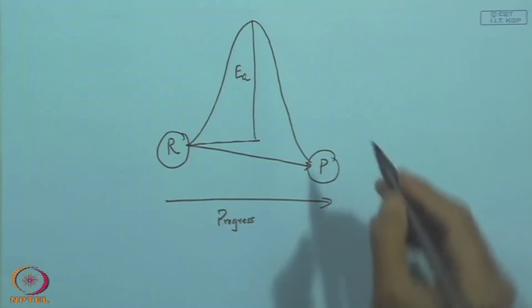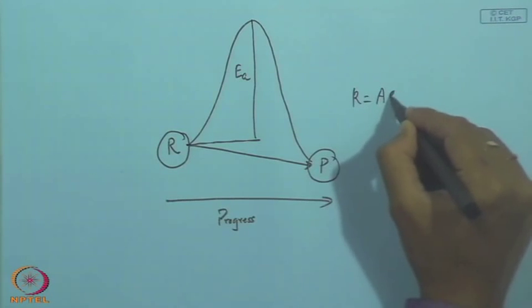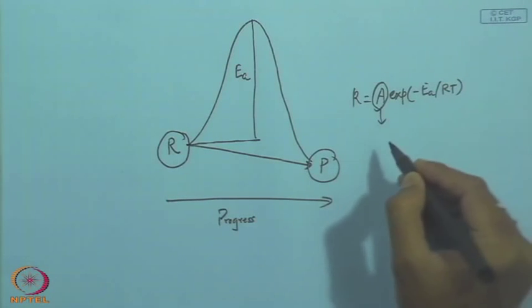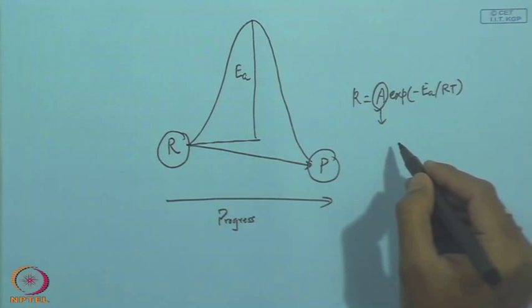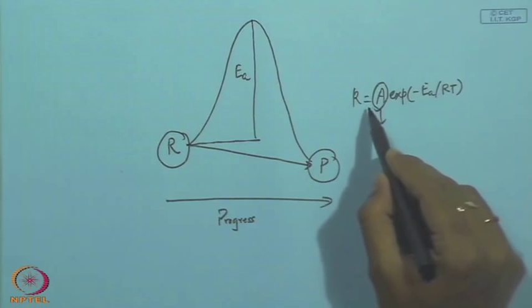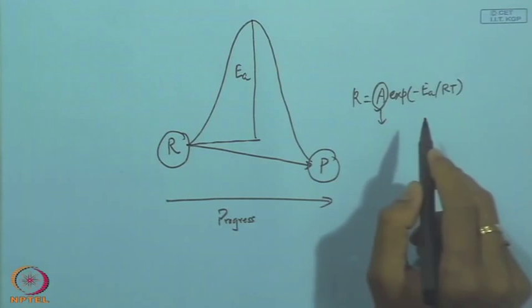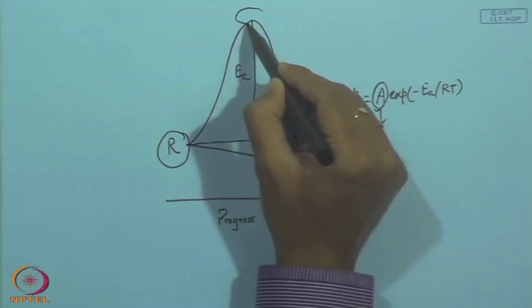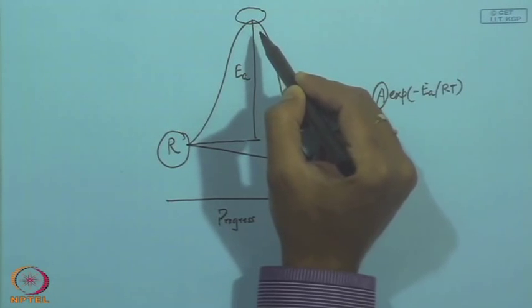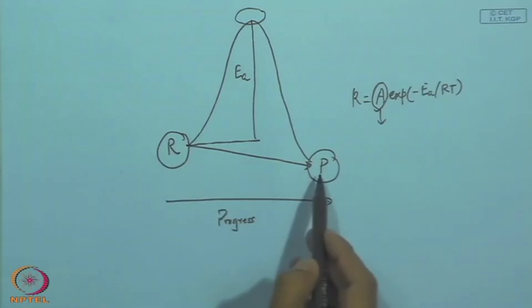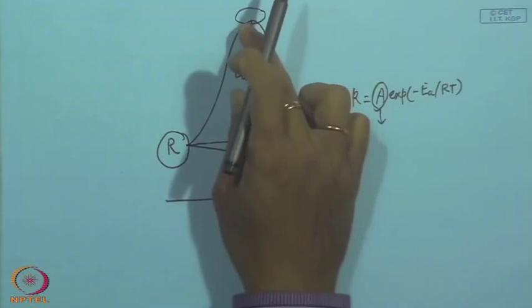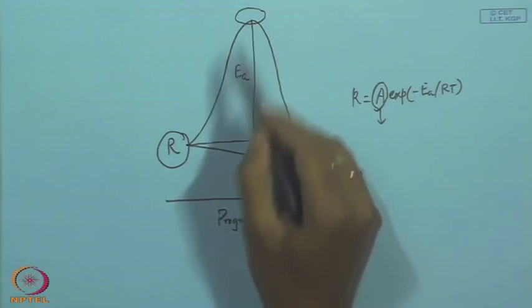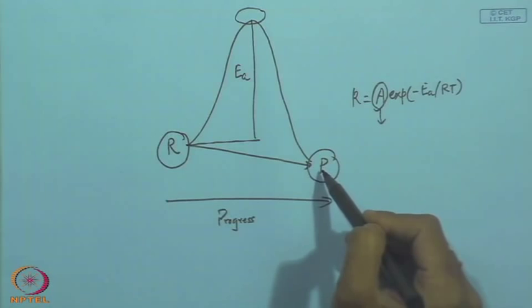The Arrhenius factor in k = A·exp(−Ea/RT) — where A is the pre-exponential term — is also called the frequency factor. The activated complex is a state that is high in energy — higher than both the reactant and product states. Both reactant and product are lower in energy compared to this activated state.